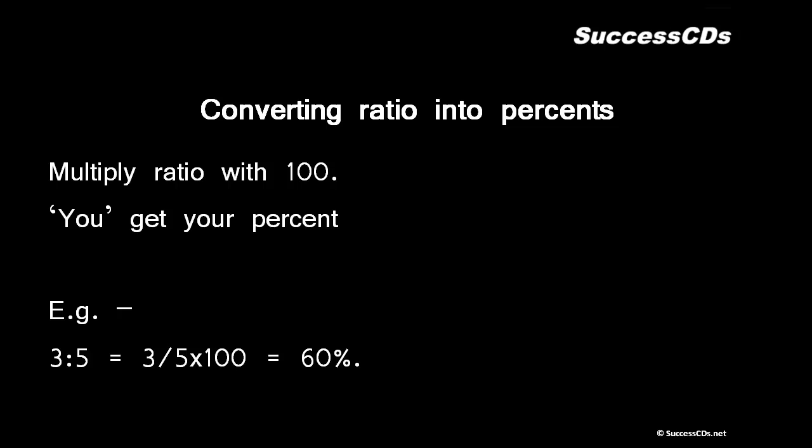For example, 3 ratio 5 - if I have to convert 3 ratio 5 into percent, I will multiply it by 100. Now 5 and 100 are divided with a common factor 5 and I get the answer to be 60. That means my answer will be 60 percent when I convert 3 by 5 into percent. Whenever we have to convert into percentage, we multiply.